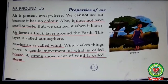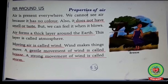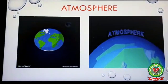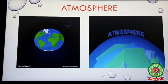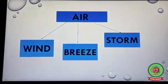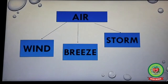Next line: air forms a thick layer around the earth. This layer is called the atmosphere. Underline this line. The earth is a planet surrounded by a blanket of air called the atmosphere. There are three modes of air: wind, breeze, and storm.